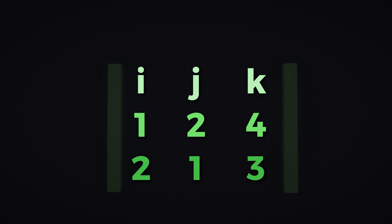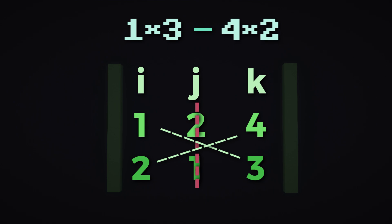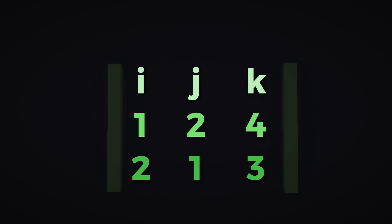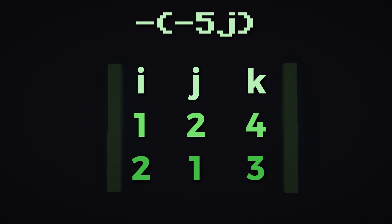Now do the same thing with J. Ignore the J column and do the same crossing motion: 1 times 3 minus 4 times 2, which equals negative 5. Now J — the Y coordinate — is special in that it will always be negative. The pattern goes: I is positive, J is negative, K is positive. So since J is always negative, we get negative negative 5J, which is just 5J.